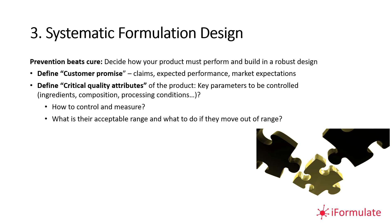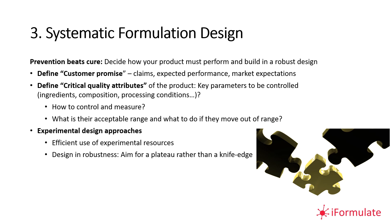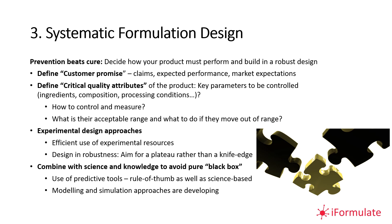There are a number of experimental design approaches and statistical methods you can use to make efficient use of experimental resources — doing fewer experiments to get the same information. You also want to design in robustness: be on a performance plateau rather than a knife edge where any change causes you to fall off the cliff. Combine this with scientific knowledge and predictive tools — rule-of-thumb or more science-based modeling and simulation approaches — rather than a pure black-box statistical method.